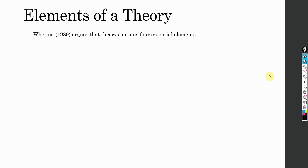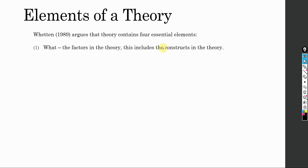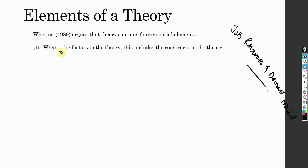What are the key elements of a theory? Whetten (1989) argues that a theory contains four essential elements. The first is 'What' — the factors in the theory, which includes the constructs. For example, you might have heard about the Job Demands-Resources model. The factors present in that model or theory represent the 'What' element.